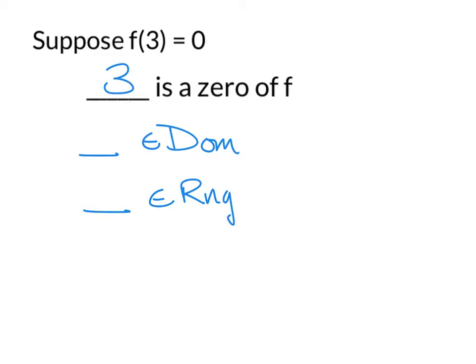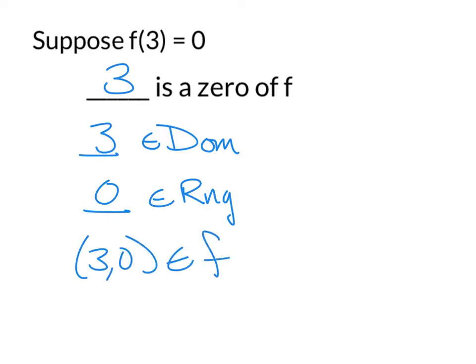Since 3 is that x-value — the value we plug in — we'd say that 3 is an element of the domain. And what comes out, f of 3 being 0, is going to be an element of the range. So we know one ordered pair: (3, 0) is one ordered pair of f.